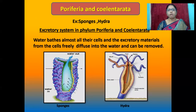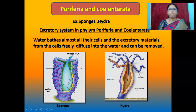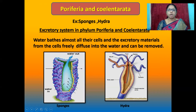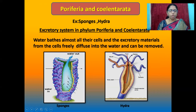The next phylum is Porifera and Cnidaria. Examples: sponges (Porifera) and hydra (Cnidaria). Water bathes almost all their cells, and excretory materials from the cells freely diffuse into the water and are removed. Sponges have pores all over the body through which water enters, and a pore called the osculum through which water flows out.